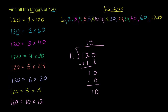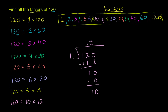So we have all of our factors: 1, 2, 3, 4, 5, 6, 8, 10, 12, 15, 20, 24, 30, 40, 60, and 120. And we're done.